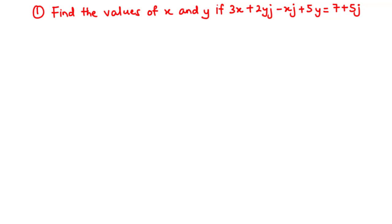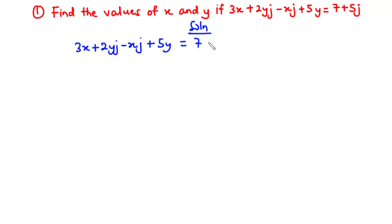Now let's consider the first question: find the values of x and y if 3x + 2yj - xj + 5y = 7 + 5j. We have 3x + 2yj - xj + 5y = 7 + 5j, and we are asked to find the values of x and y. These values are made up of real and imaginary components, and we need to group them into real and imaginary parts.